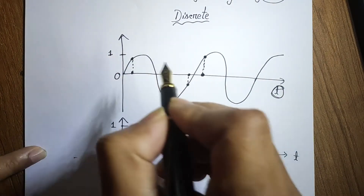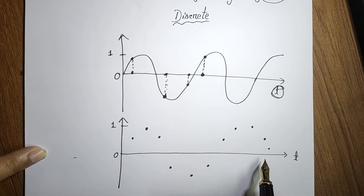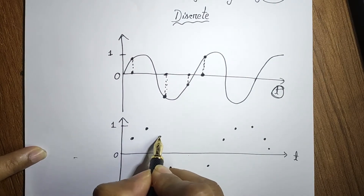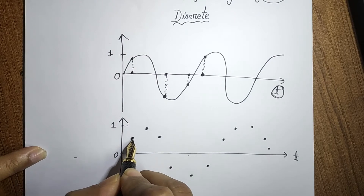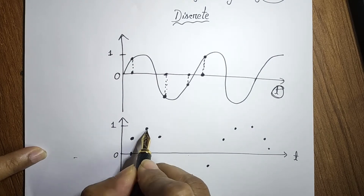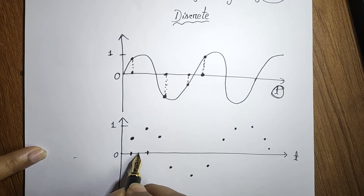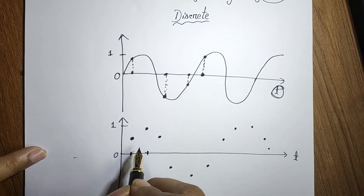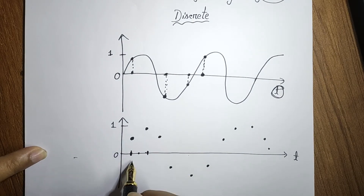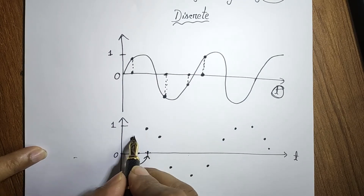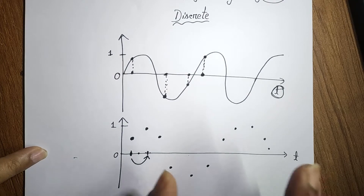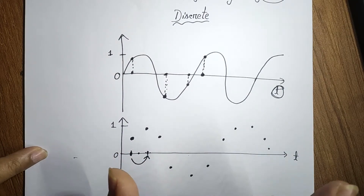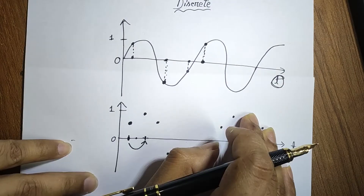With a discrete signal, there are only specific discrete points. If you are at one of those points you get the value of the signal, but if you are in between two points you will not get any value, because the signal is not continuous — it has a value at this point and then at the next point, with nothing in between. This is the property of a discrete signal.